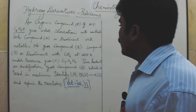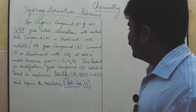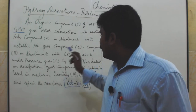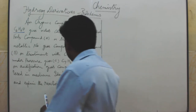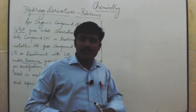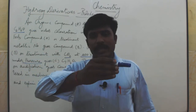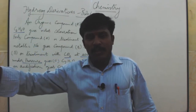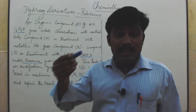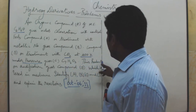Compound B on treatment with CO2 at 400 Kelvin under 4 to 7 atmospheric pressure gives compound C. This is the Kolbe reaction. Sodium phenoxide reacts with carbon dioxide under these conditions to give sodium salicylate. Sodium salicylate decomposed in HCl gives salicylic acid.